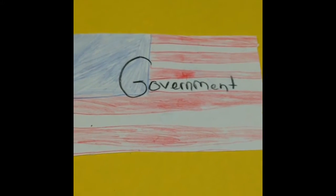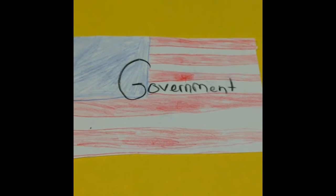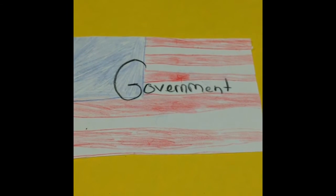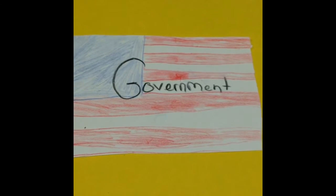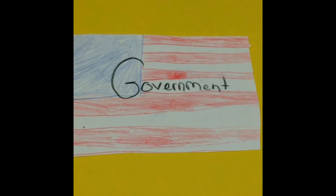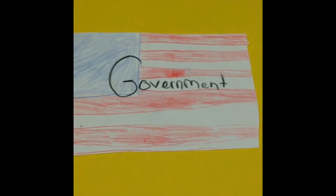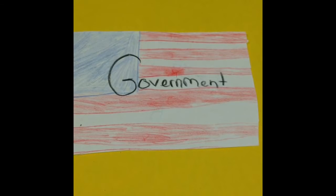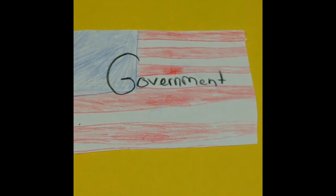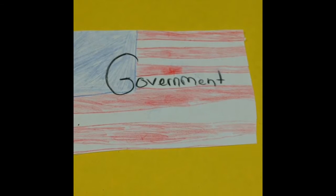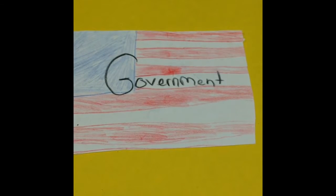This is a picture of the United States government. I chose this picture to represent the power of national and state governments' powers denied by the Constitution. I chose this picture because it symbolizes the government. This relates because it is showing the powerful government and the powers it denies for the national and state governments.